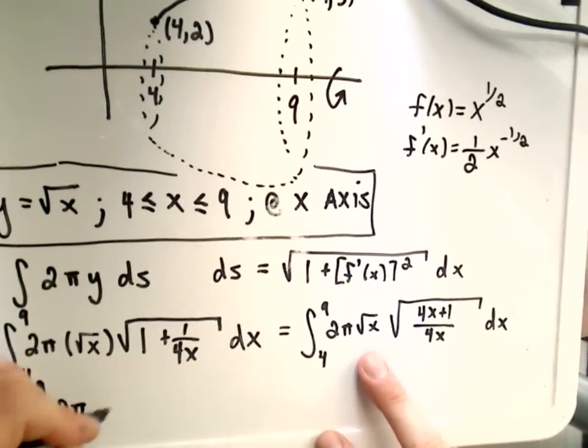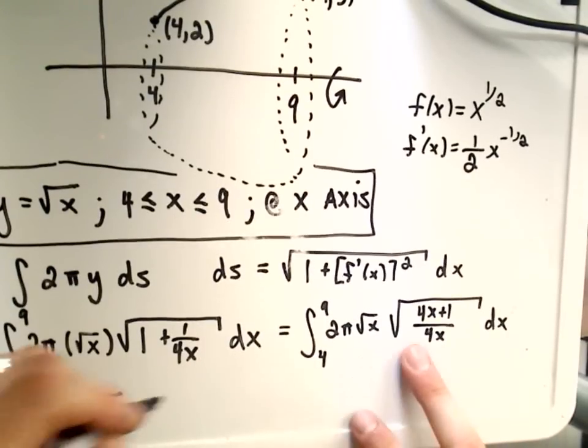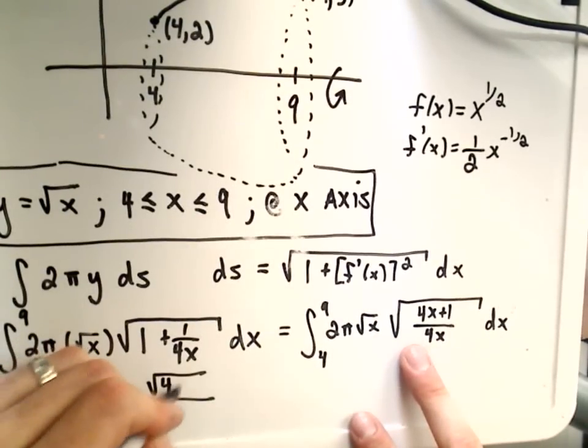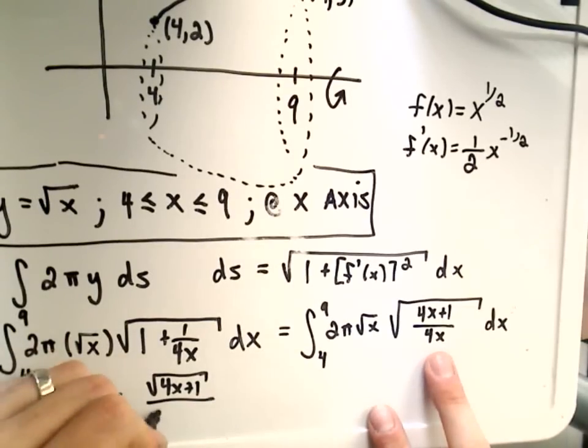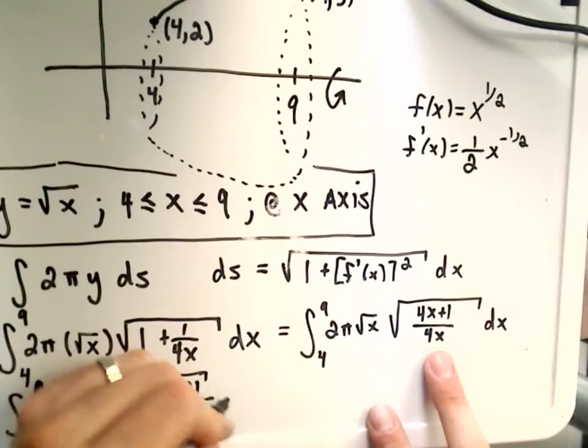And to integrate this, that's going to be from 4 to 9. Again, I've got 2π. I've got square root of x. We could write this as the square root of the top, which is 4x plus 1. If you take the square root of the bottom, we'll get 2√x dx.